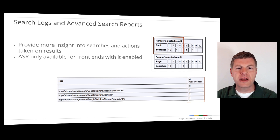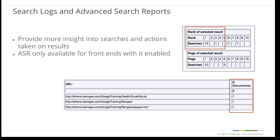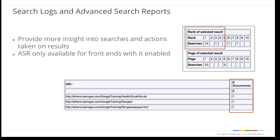One limitation with search reports and search logs is that they only show us the search itself. What happens after a user runs a search? If the search returned no records, we can assume it's a failed search. But some searches may return results but still be unsuccessful from the user's perspective. Advanced Search Reports lets us see what happens after a search — does the user click one of the search results, click to view the next page, or run a completely new search? Advanced Search Reports uses click tracking to track the user's actions after the search. By default, the GSA collects Advanced Search Report data, and there is a checkbox to enable this within the Page Layout Helper for each front end.